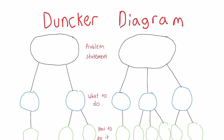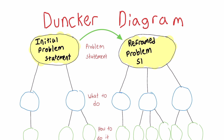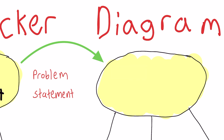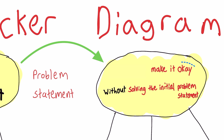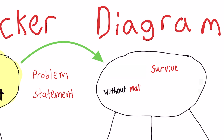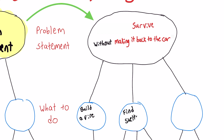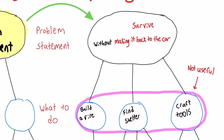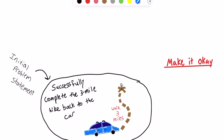We went through a lot of steps to create a Dunker diagram, so let's emphasize the most crucial parts. First, you need to carefully write the problem statements. The left tree is easy — you write your initial problem statement, often given by a client or supervisor. You then use that to create the reframed problem statement. The reframed problem statement will always follow the format: make it okay without solving the initial problem statement. Be extra careful when figuring out what 'make it okay' and 'solving the initial problem statement' mean for your specific problem. For example, someone might write 'survive without getting back to the car' — this leads to wilderness survival solutions that aren't useful. Look for something non-negotiable in the initial problem statement.